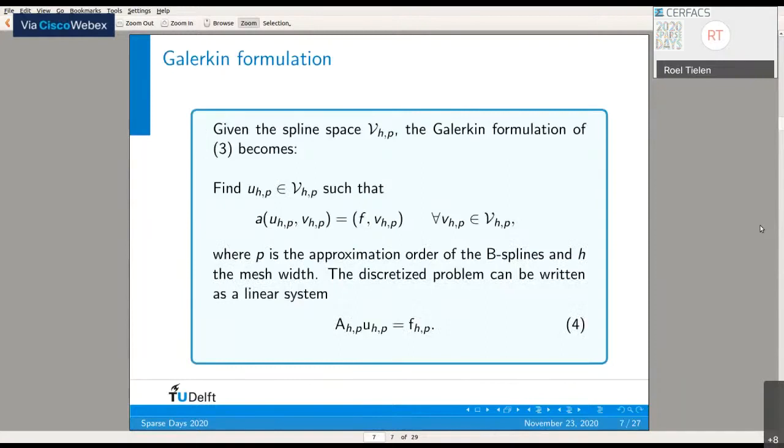Based on the variational formulation, we discretize with B-splines to obtain the Galerkin formulation. Basically, we obtain a linear system of equations: A times U equals F. The subscript H stands for the mesh width, so the amount of spline functions we have, and P denotes the approximation order.